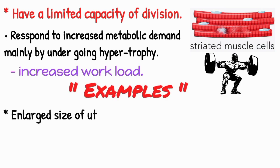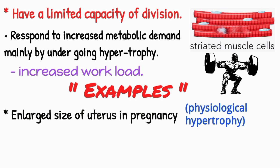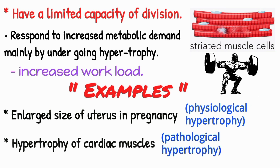Enlarged size of the uterus in pregnancy is an excellent example of physiological hypertrophy. Hypertrophy of cardiac muscles that may occur in a number of cardiovascular diseases is the best example of pathological hypertrophy.